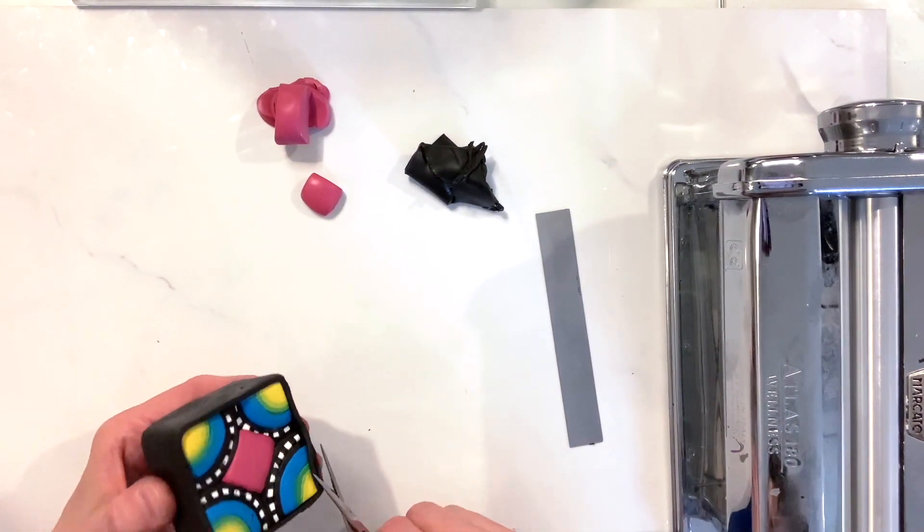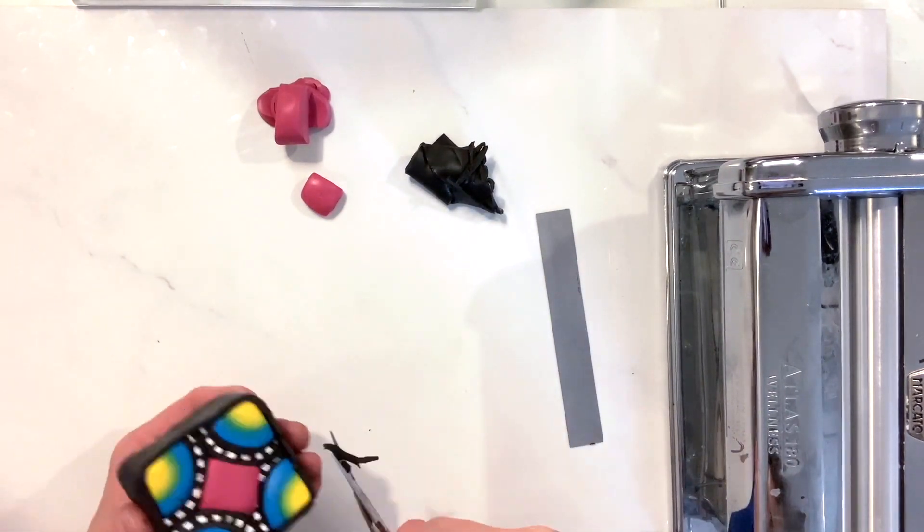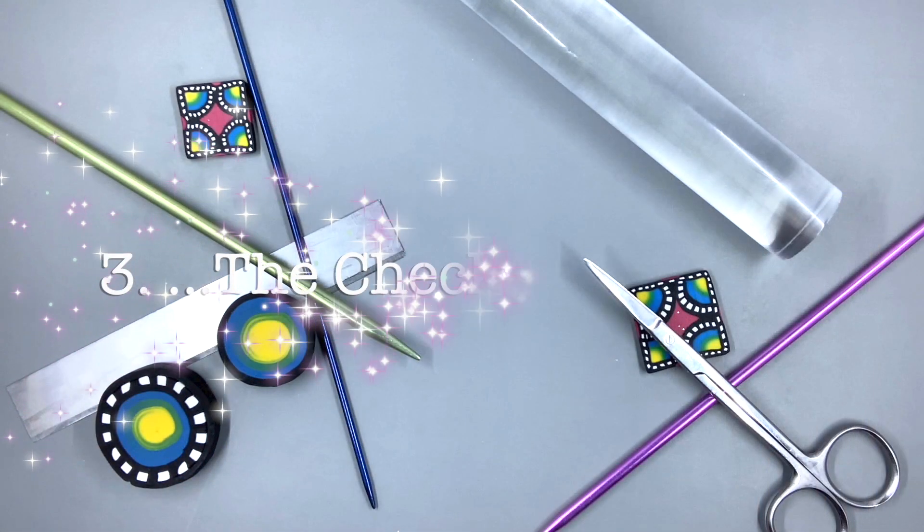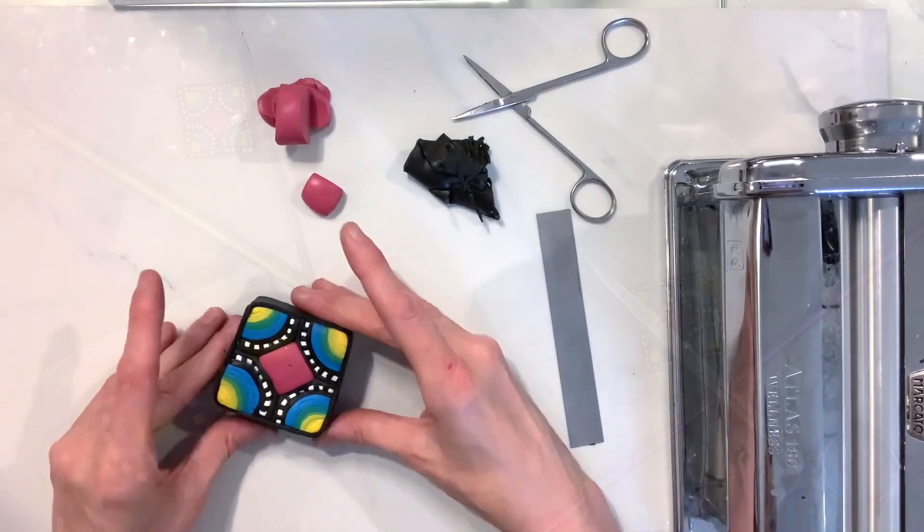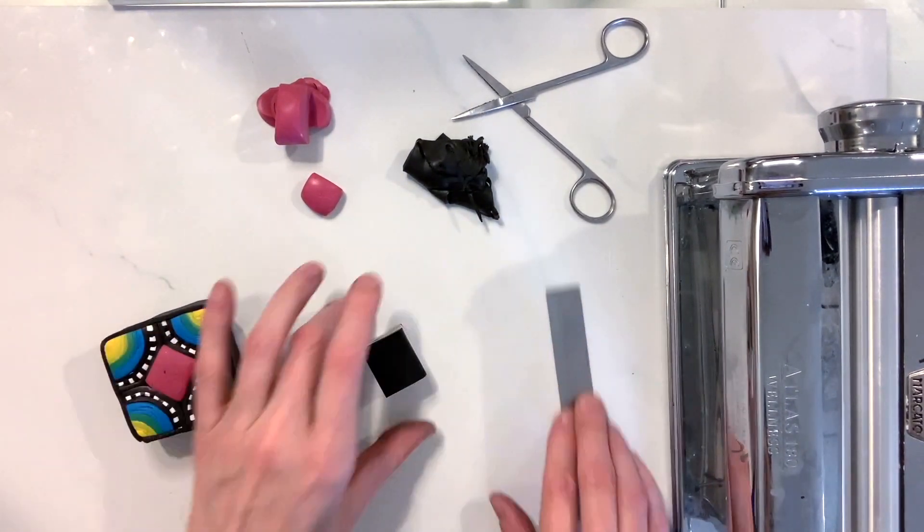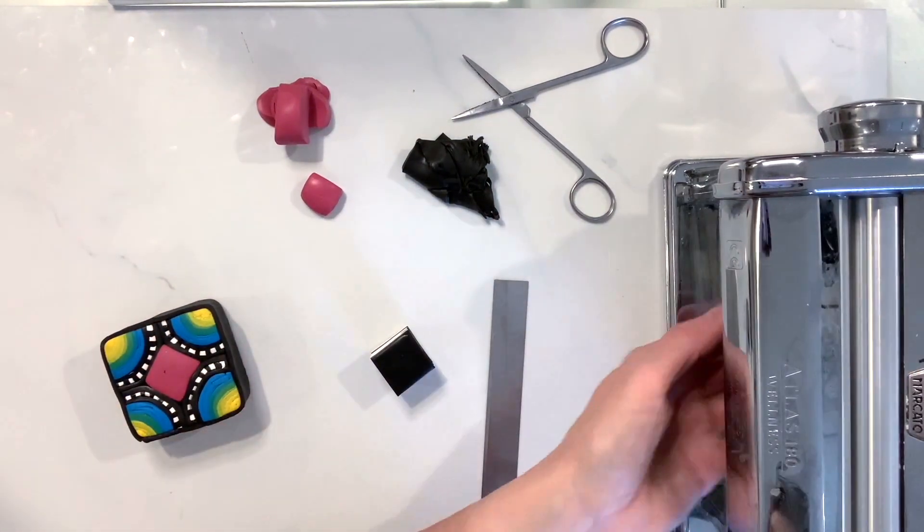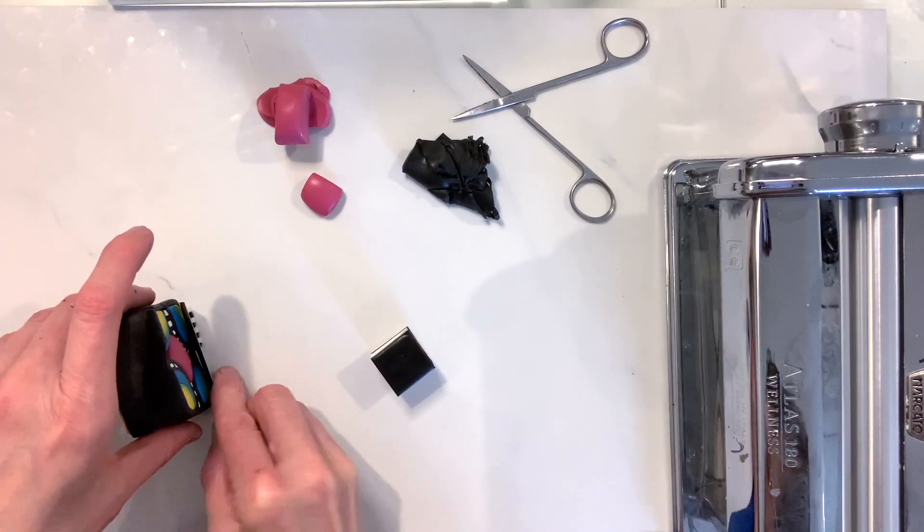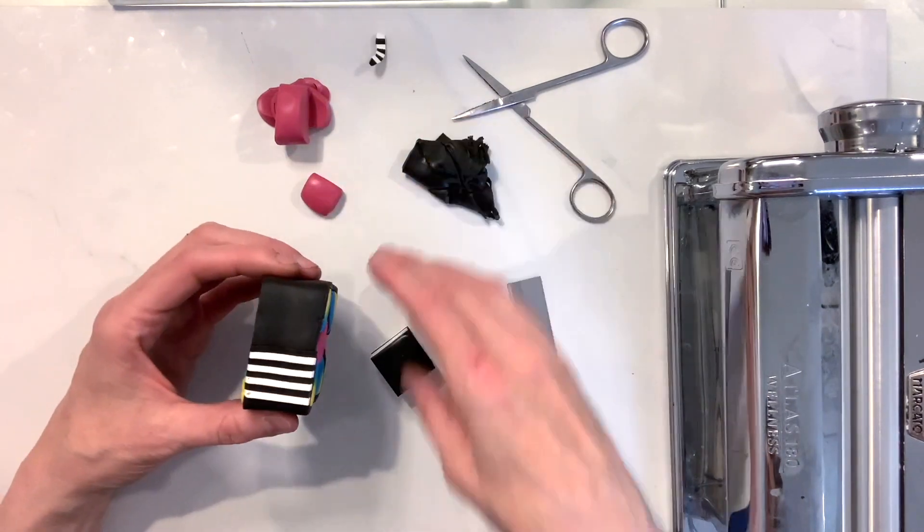Now we're going to go ahead and add in our checkered layer. What you're going to do is use a black and white stack. If you haven't ever done a black and white stack, I have a prior video on that, so check it out. This is done on a number one setting—at least the stack was created on number one setting with eight layers.